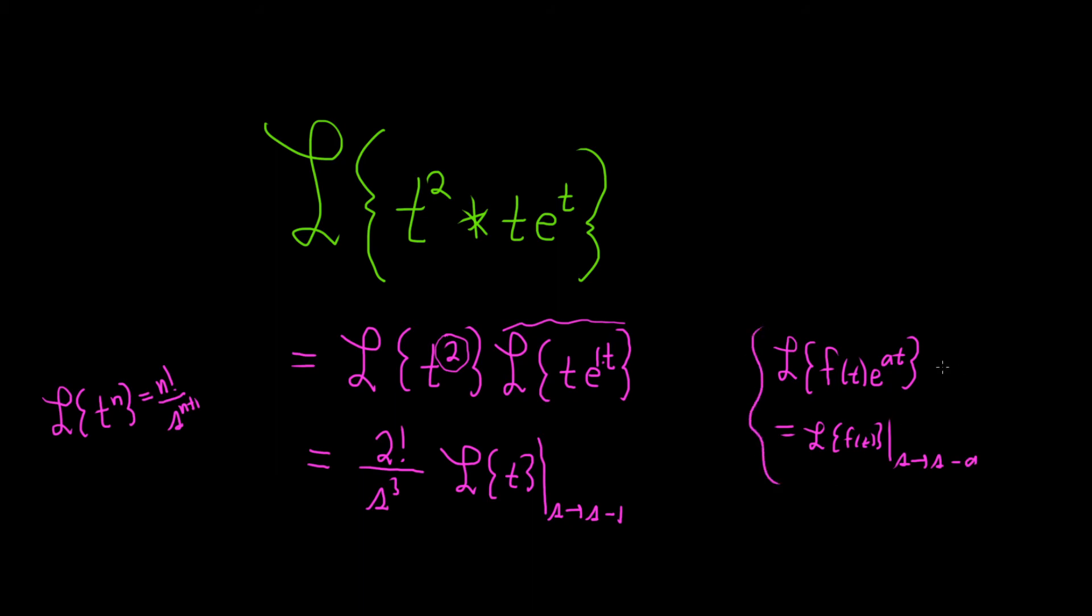So that's called the first translation theorem. So we're using it here in the case where a is equal to 1. Kind of nice, right? We start with the convolution problem and then it turns into a problem with the first translation theorem. Okay, let's keep going.